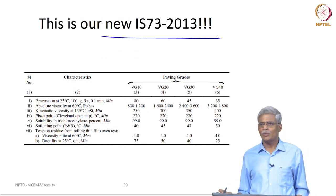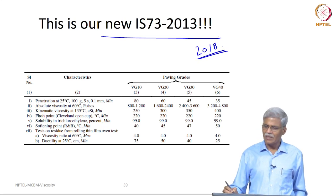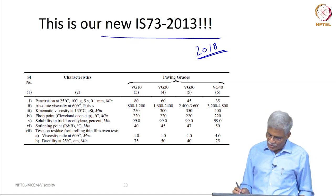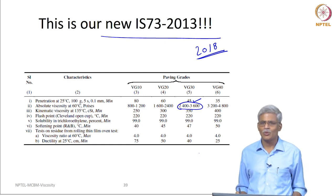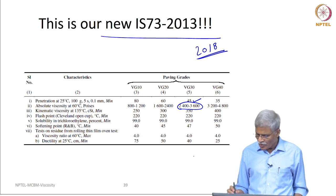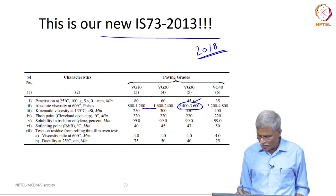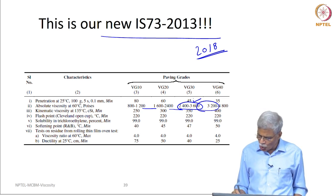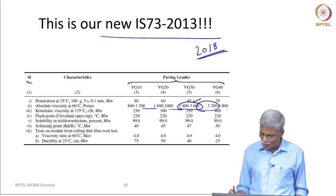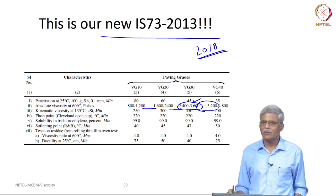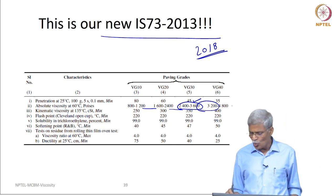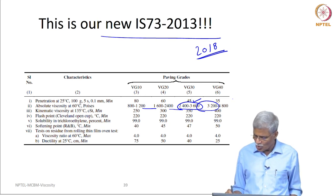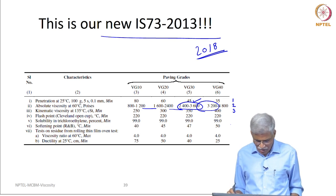Right now, this is the IS 73 2013, which has been revised and reissued in 2018. You can see that the penetration is kept at a minimum value of 45, the viscosity is given as 2400 to 3600, and the rest of the values follow. As you can see, there is no overlap between VG 10 and VG 20, and no overlap between VG 20 and VG 30. There seems to be some overlap at VG 40, but you should also see that the penetration minimum values are completely different, and the kinematic viscosities are also completely different.